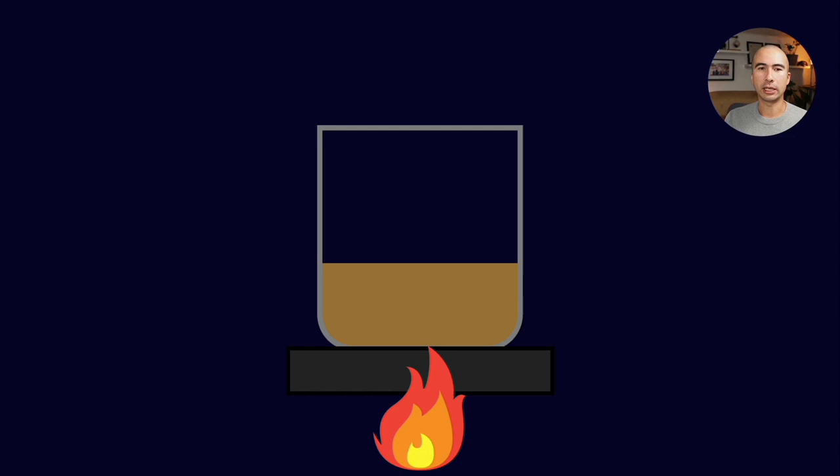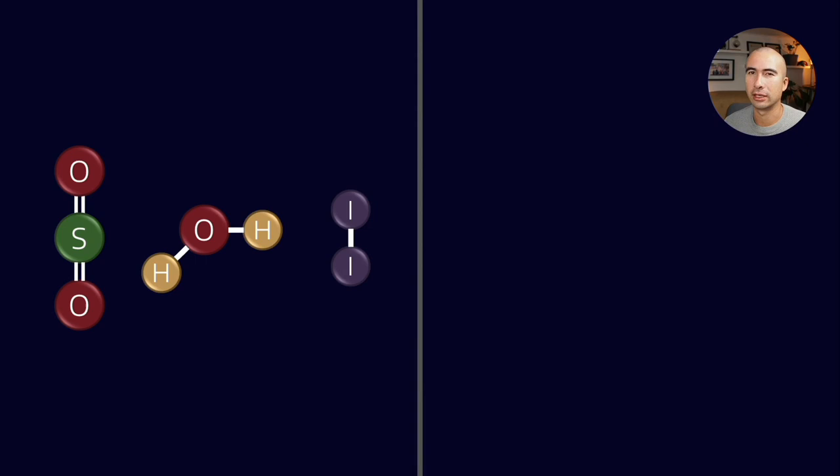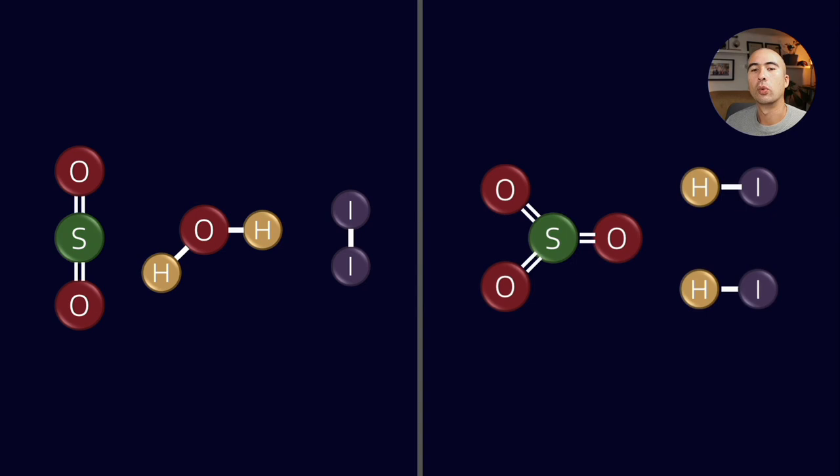So all we want is something that can measure very specific quantities of water, and fortunately we have a reaction that can help us. So if I have sulfur dioxide, water, and iodine, what they react to make is sulfur trioxide as well as hydrogen iodide.